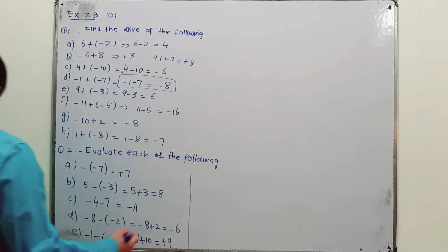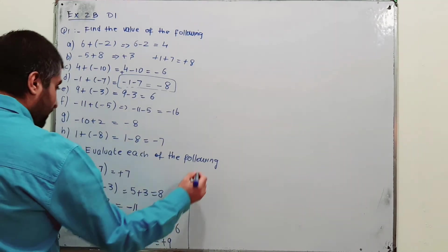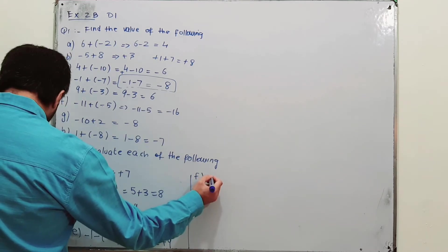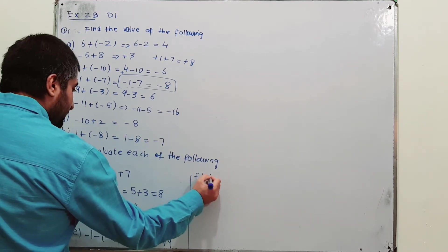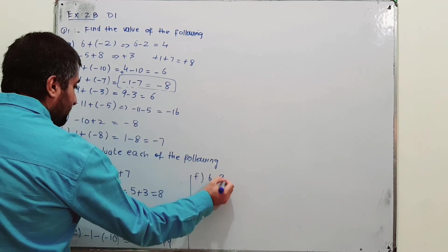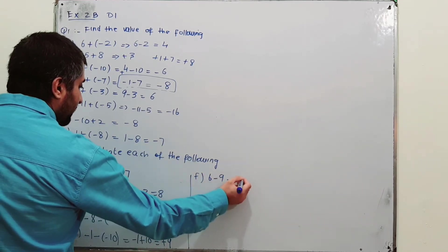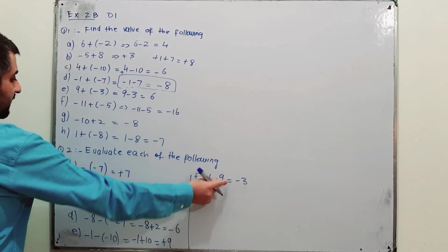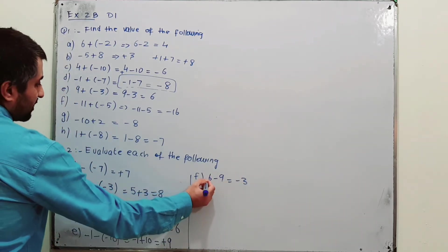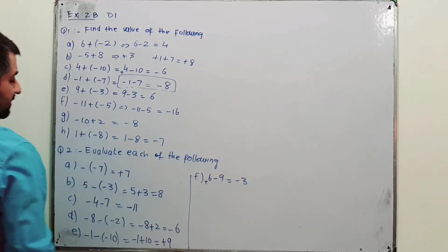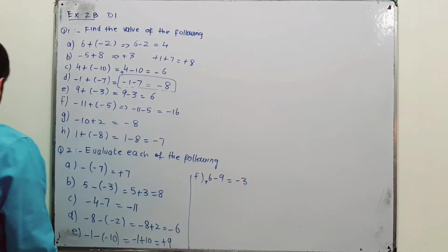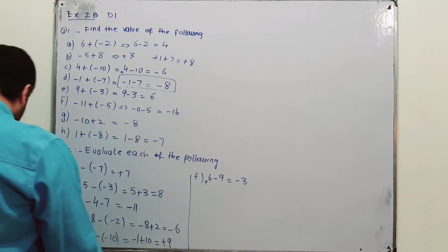Part F: 6 minus 9. That gives minus 3. Here 6 is positive and 9 is negative, so 6 minus 9 is minus 3.